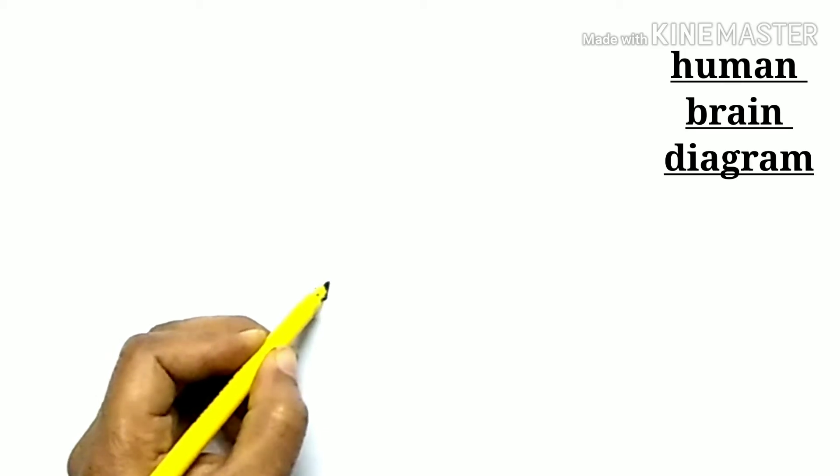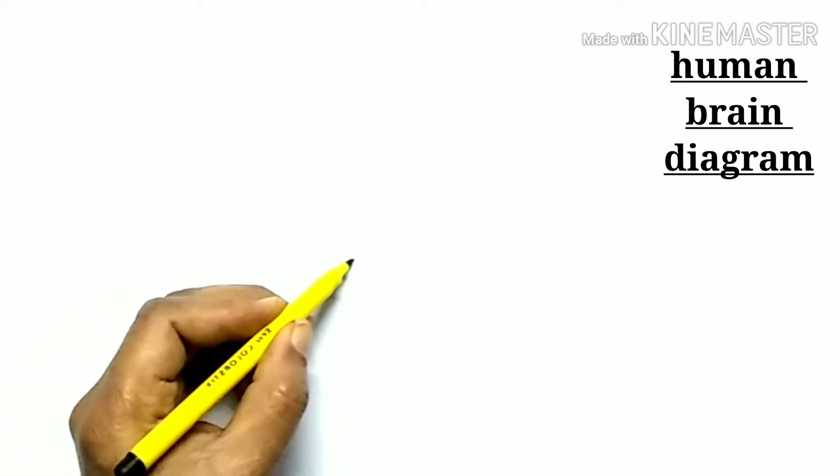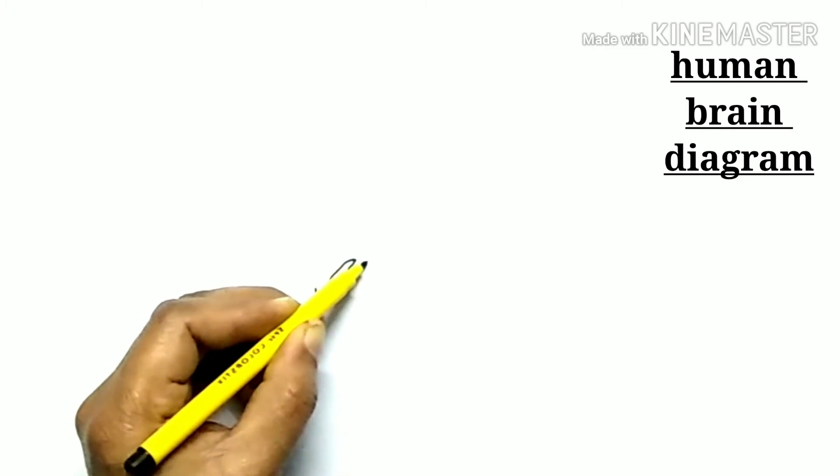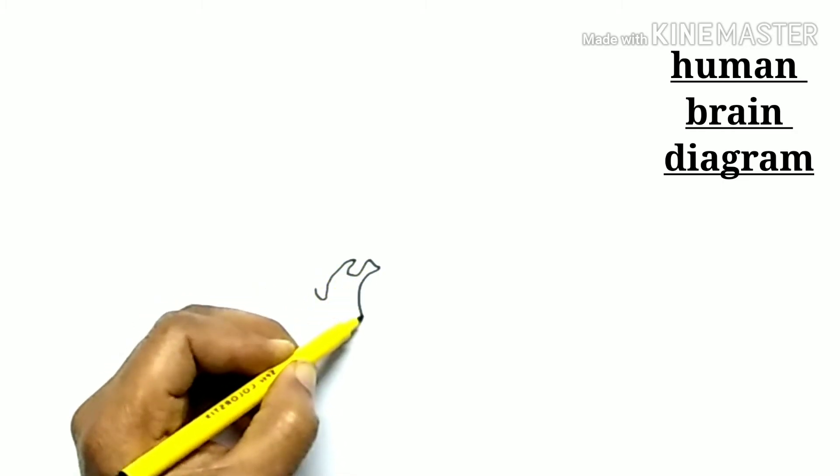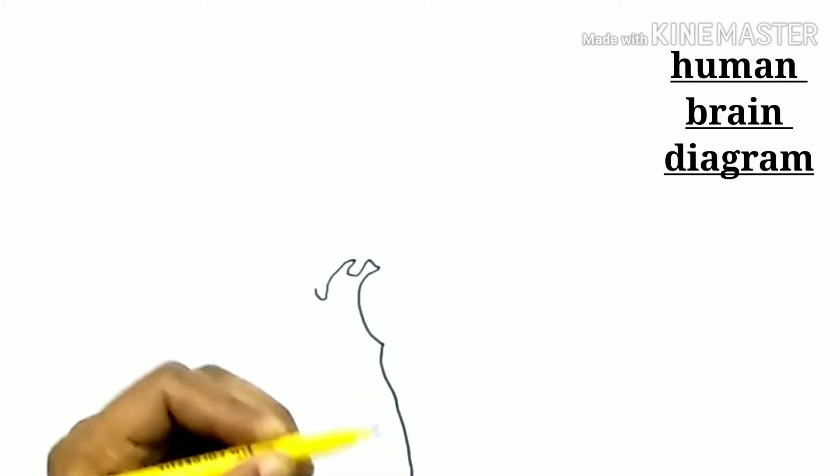Hello viewers, welcome back to my channel. Today we are going to draw a human brain diagram, so let's start. The brain is the command center for the nervous system. It receives input from the sensory organs and sends output to muscles.